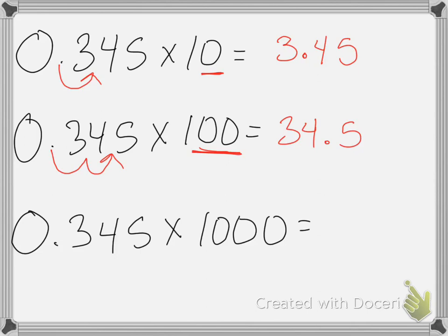And the last one is multiplied by 1,000. There's three zeros, so we shift it three places. 1, 2, 3. So my answer is going to be 345.